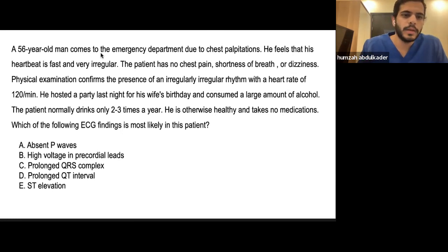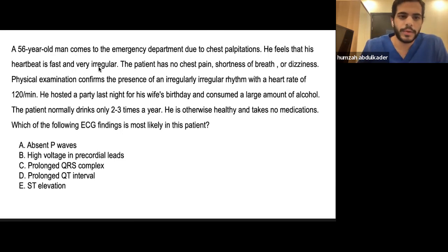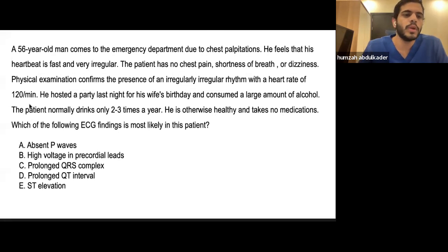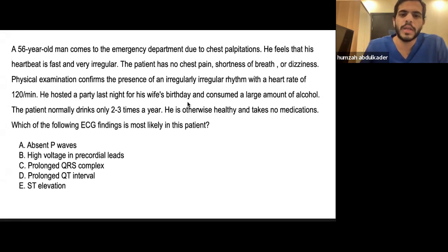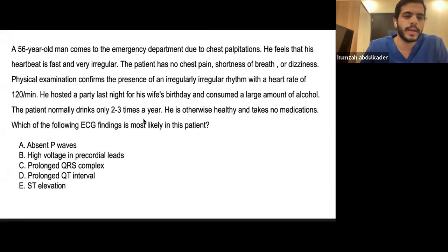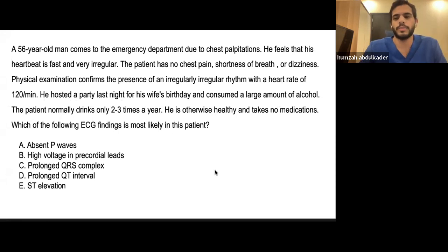A 56-year-old man comes to the emergency department due to chest palpitations — he feels his heartbeat is very fast and very irregular. He has no chest pain, shortness of breath, or dizziness. Physical examination confirms an irregularly irregular rhythm with a heart rate of 120 per minute. He hosted a party last night for his wife's birthday and consumed a large amount of alcohol. He normally drinks only two to three times a year and is otherwise healthy, taking no medications. Which ECG finding is most likely in this patient?